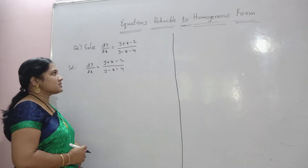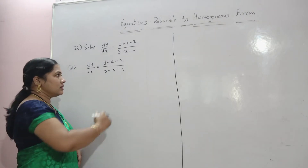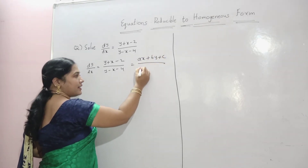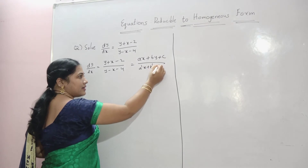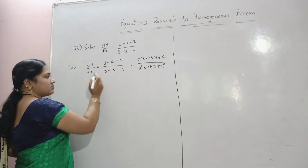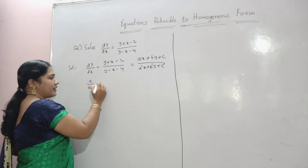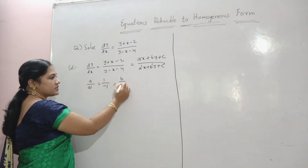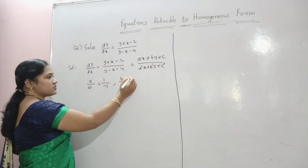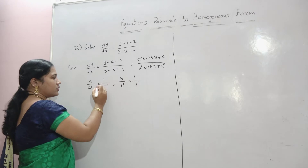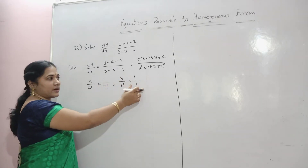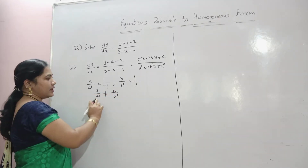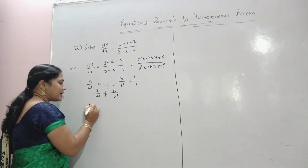Solve: dy by dx equals (y plus x minus 2) divided by (y minus x minus 4). This is in the form ax plus by plus c divided by a-dash x plus b-dash y plus c-dash. Here a is 1 and a-dash is minus 1, so a by a-dash is minus 1. The coefficient b of y is 1 and b-dash is 1, so b by b-dash is 1. Since a by a-dash is not equal to b by b-dash, we proceed with the substitution method.